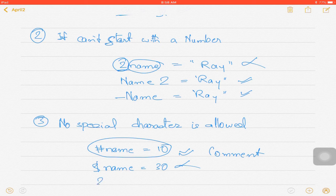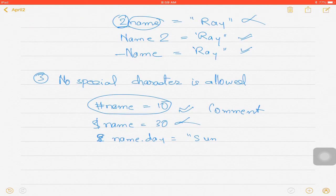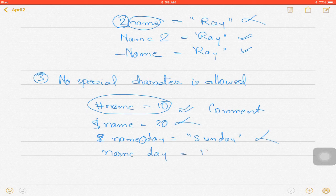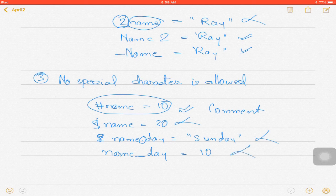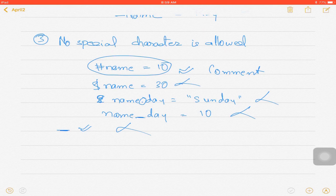Again, it is not valid because it has a special character in it. I cannot even add spaces in between, like 'name space day is equal to maybe 10,' whatever doesn't matter. There is a space, so this is also invalid. As of now, we can only include underscore. Underscore is the only valid special character; everything else is invalid.